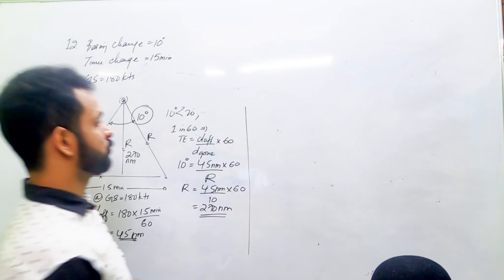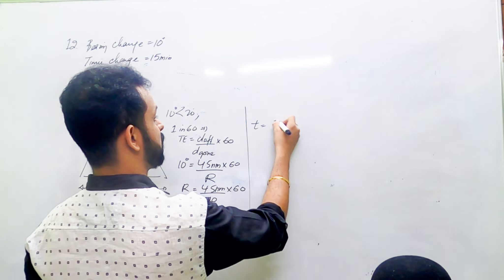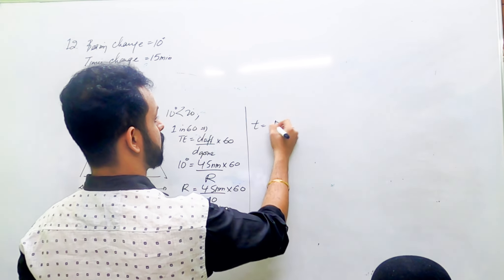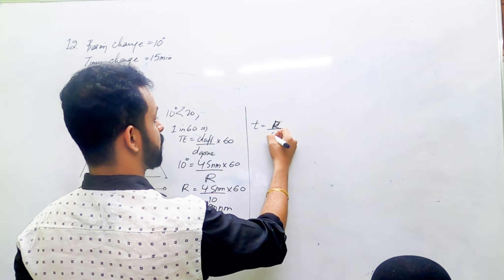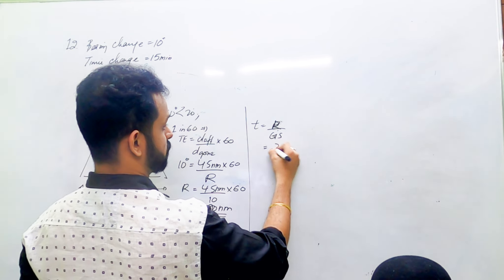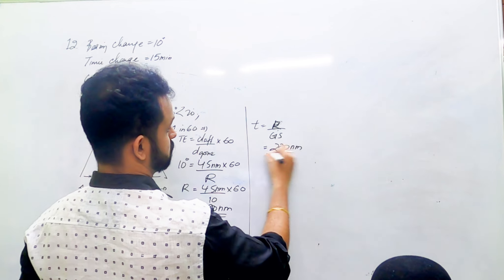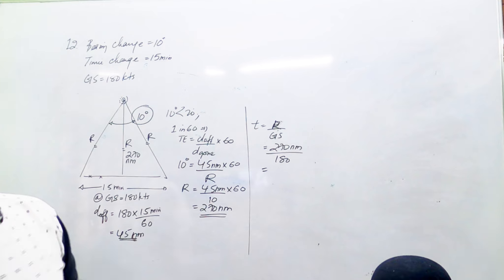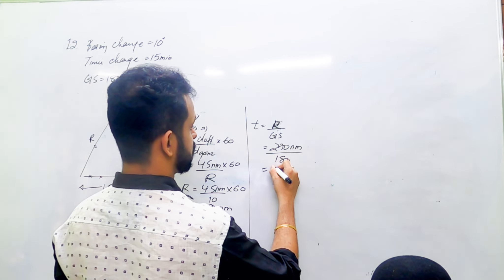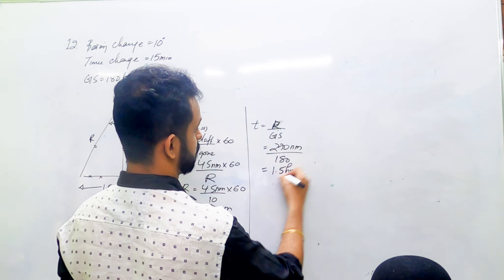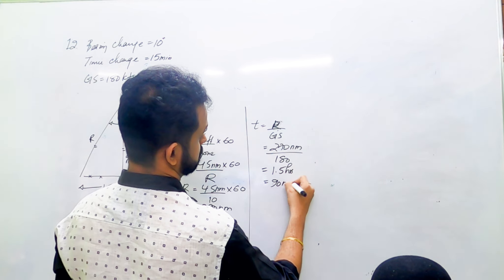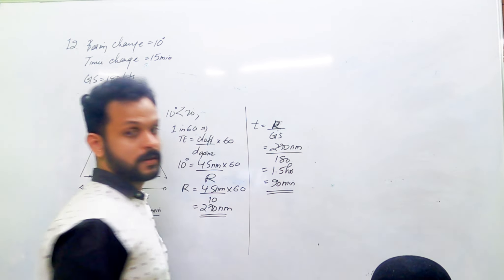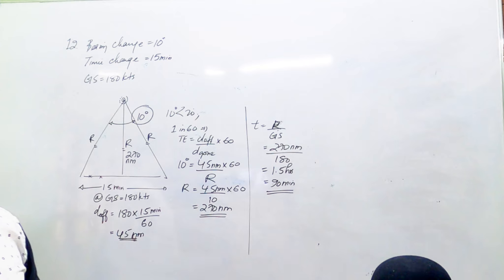How long will it take for the aircraft to reach? Time equals distance divided by speed. The range is 270, ground speed is 180. That's 1.5 hours, which is 90 minutes for the aircraft to reach the station.